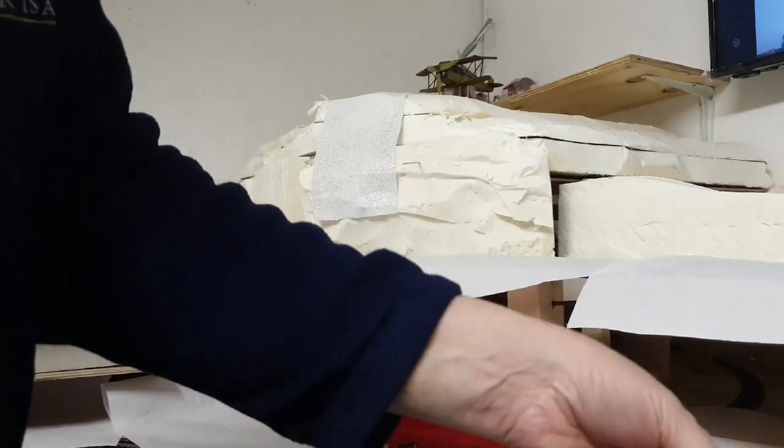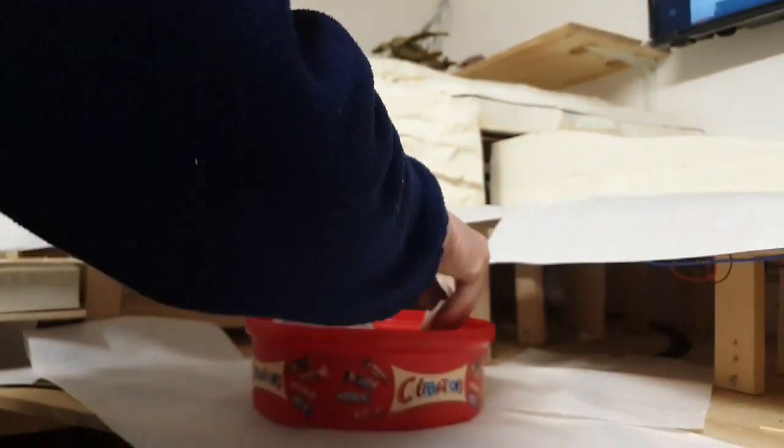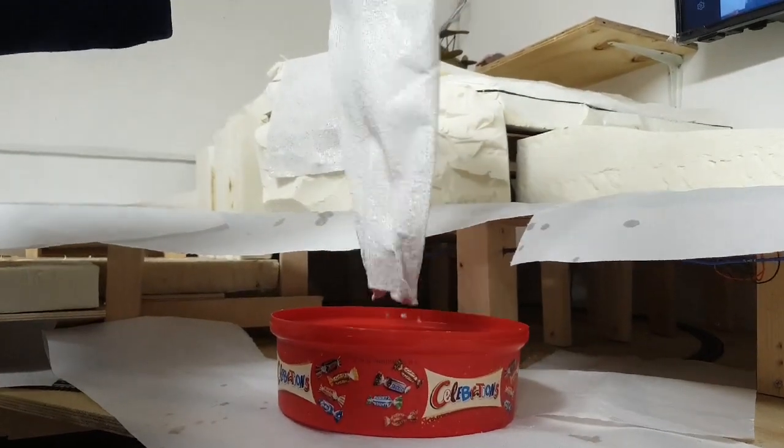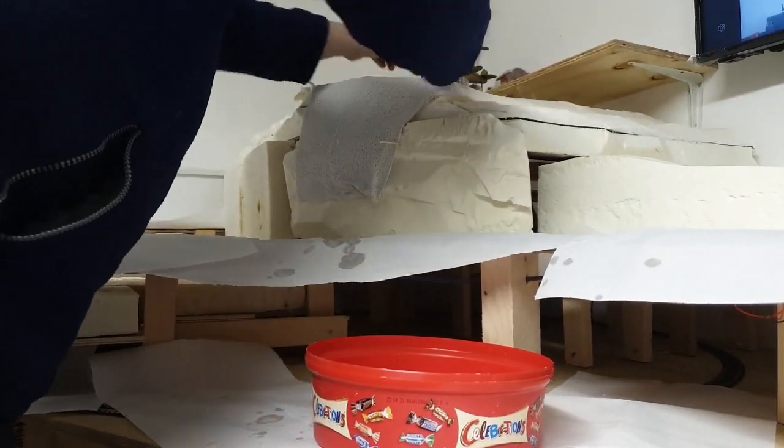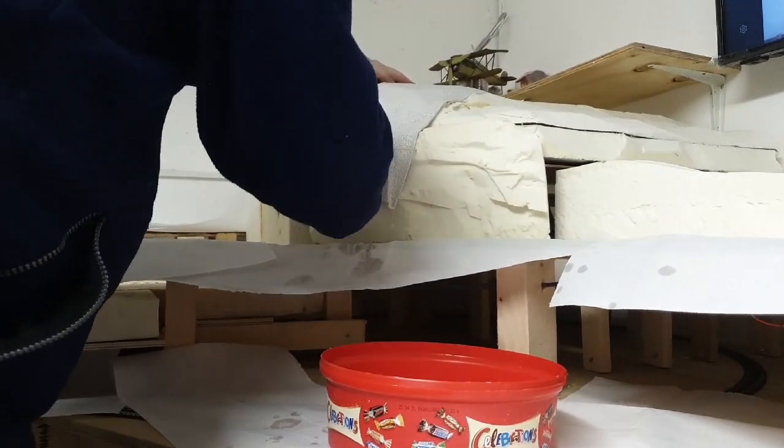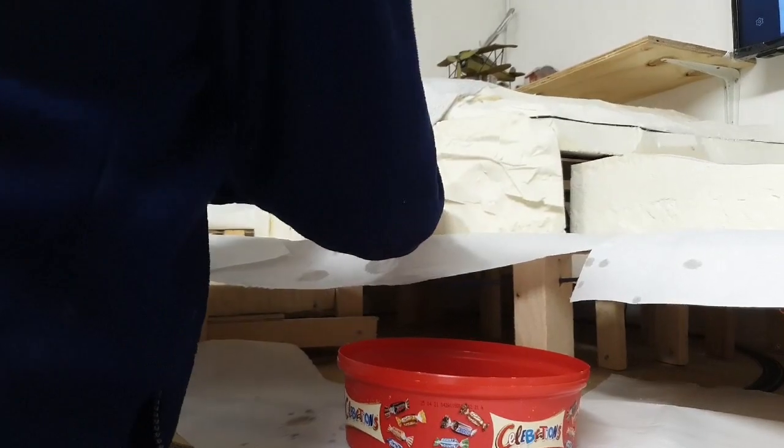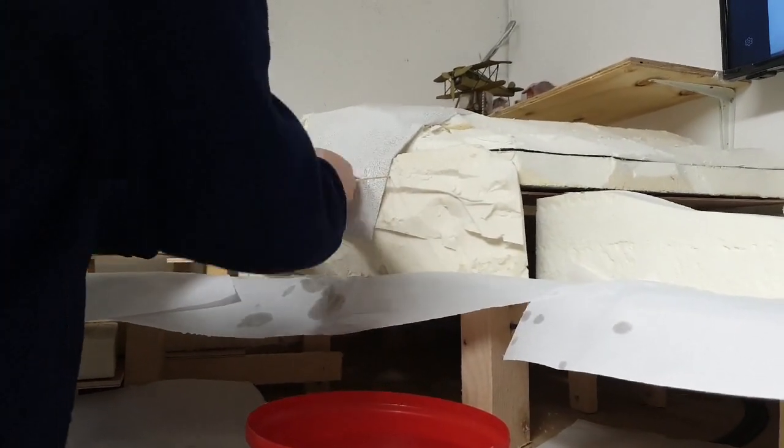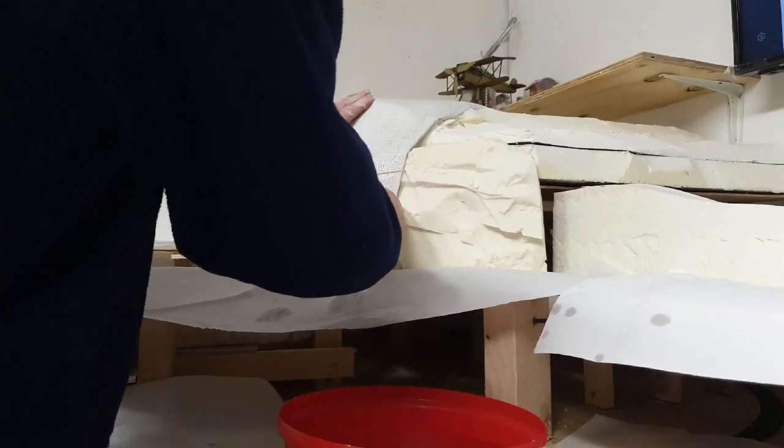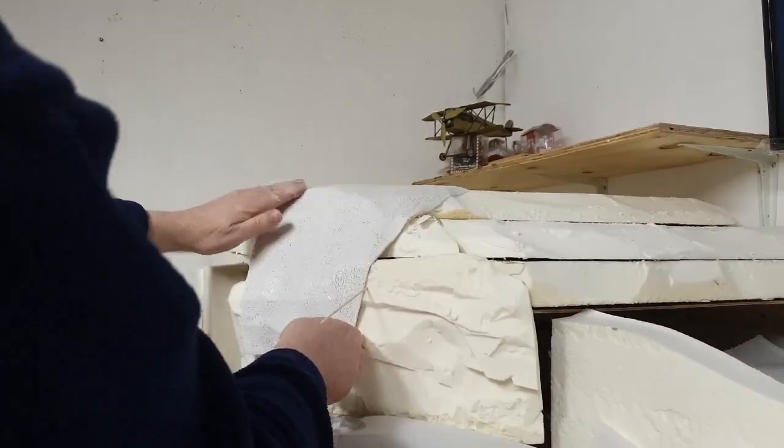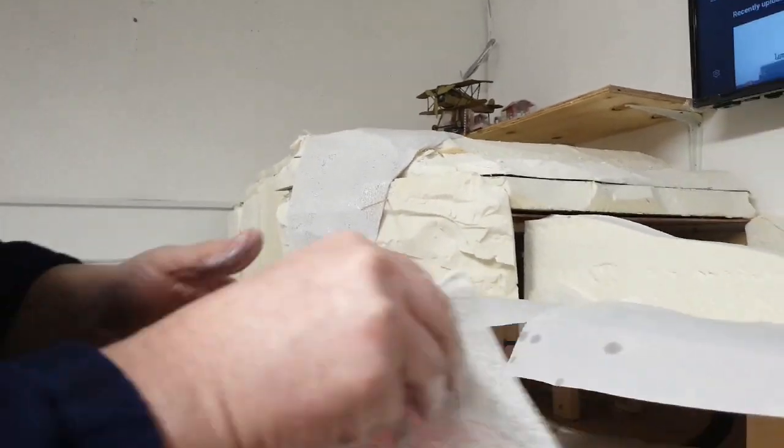Then you just want to repeat that process. Now the plaster can be quite caustic so if you have sensitive skin you might want to use rubber gloves just to protect your skin, and it's just a matter of smoothing it over trying to fill in the holes as you go and then just adding layers.